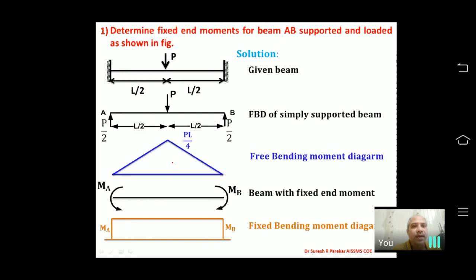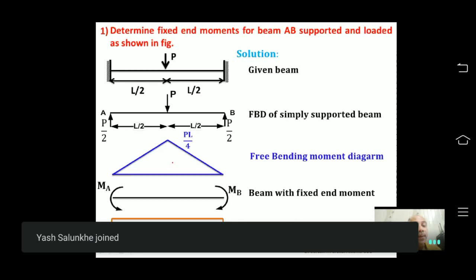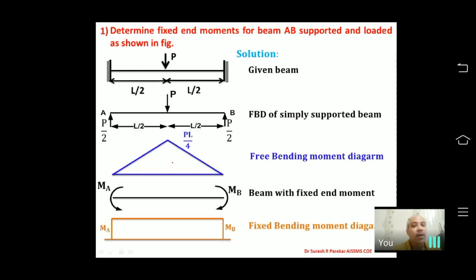The free bending moment diagram is plotted on the compression side, while the fixed end moment diagram is plotted on the tension side. This is because we will superimpose one on the other: common portions cancel and the remaining portions are plotted on the tension side.